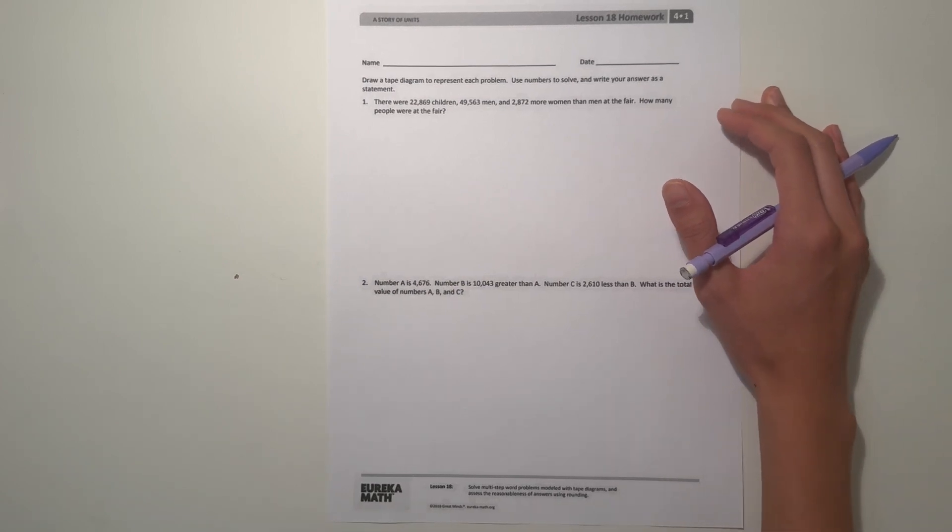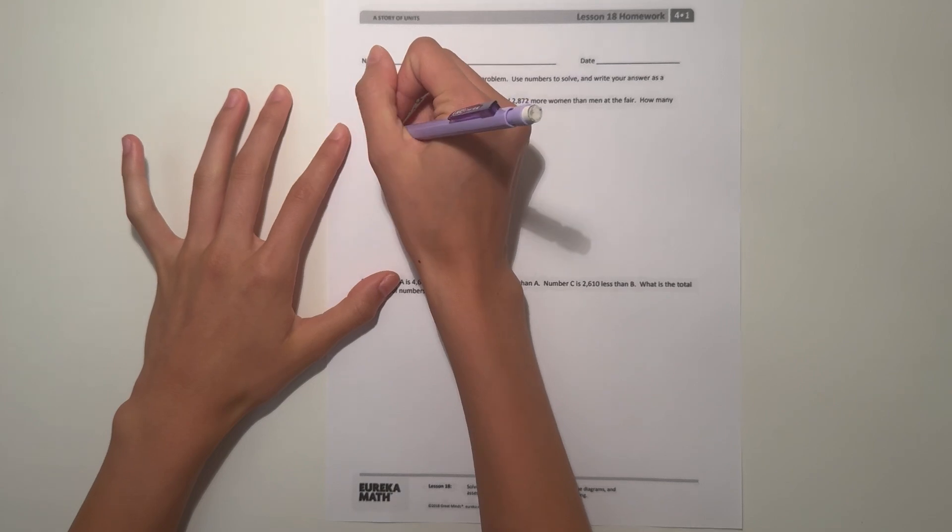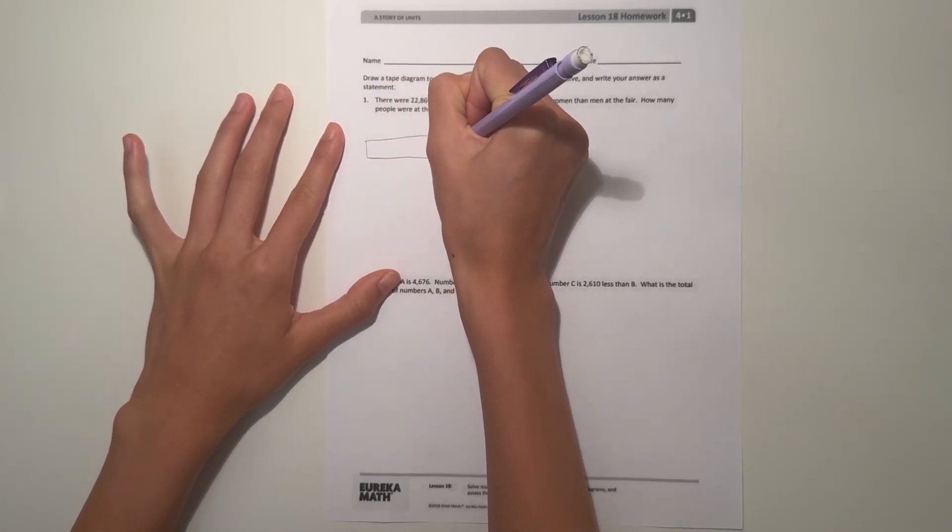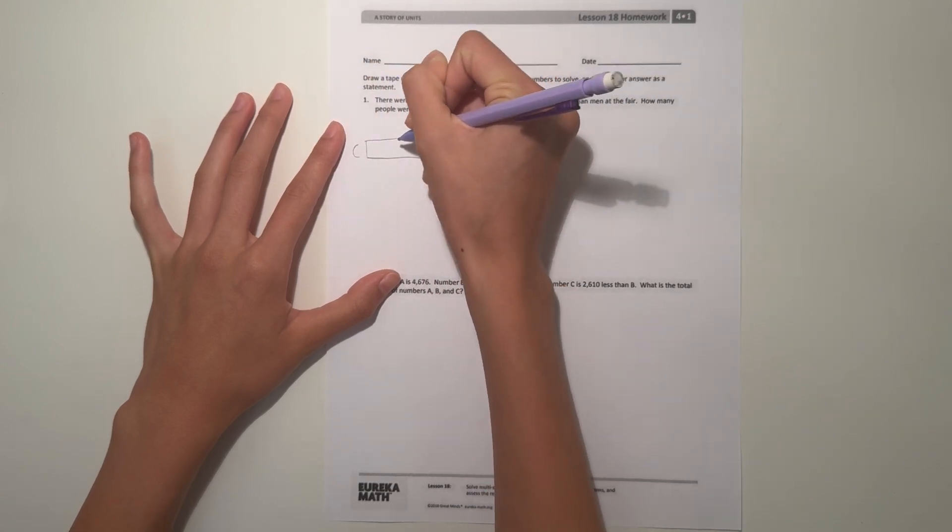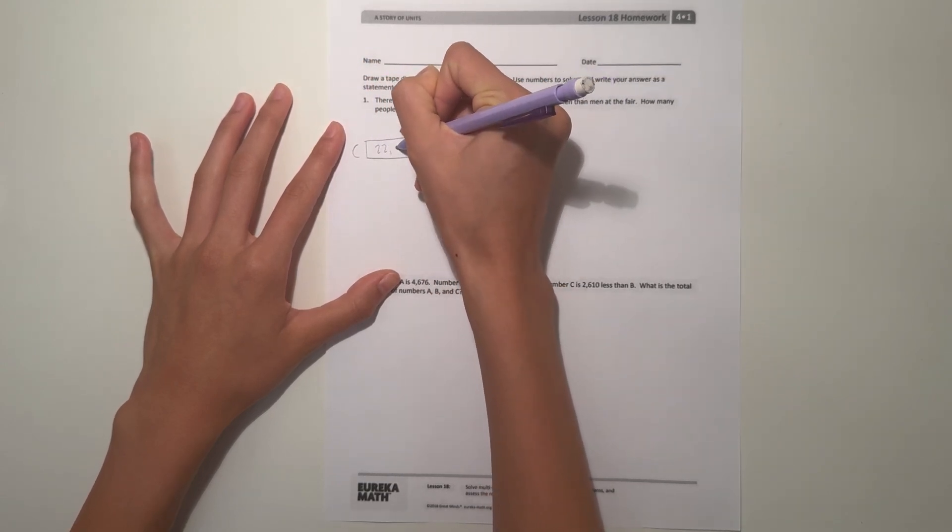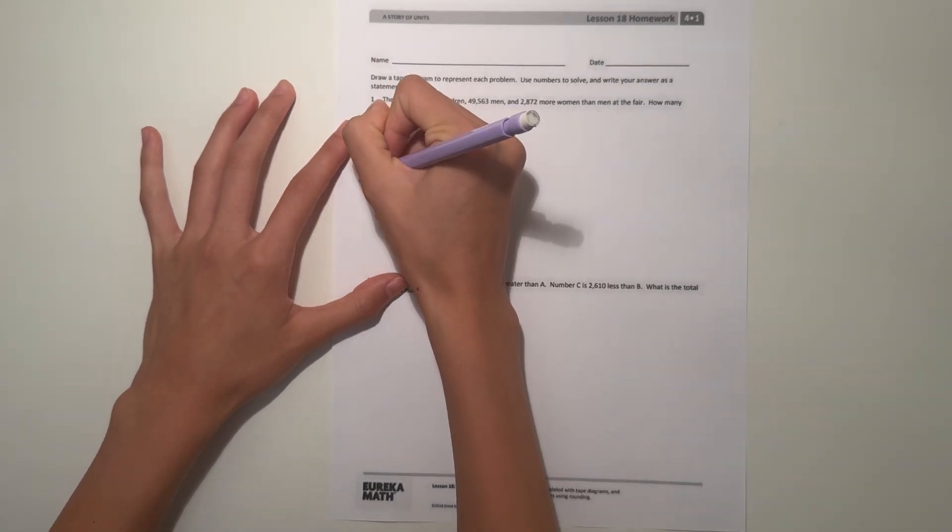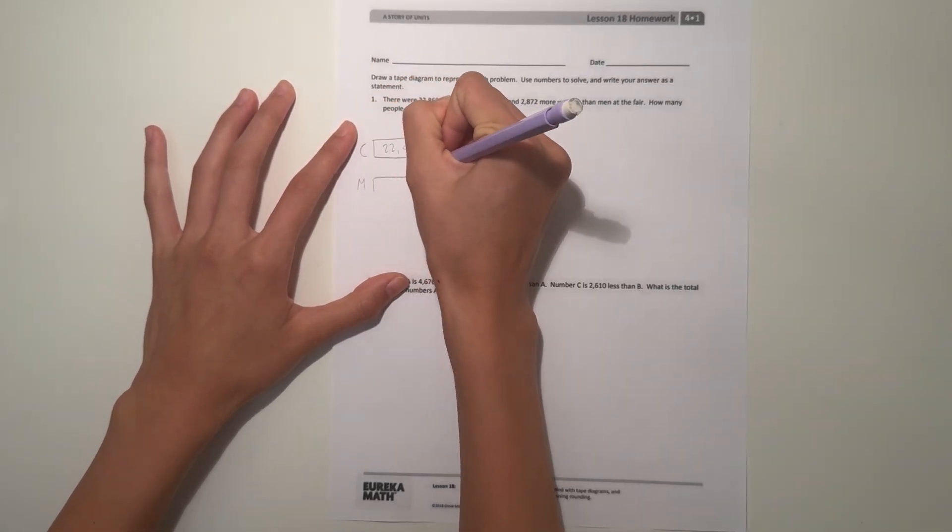Let's start with our tape diagram. We know children - I'll label C for children, there are 22,869 children. And then we also know M for men, there's 49,563 men.